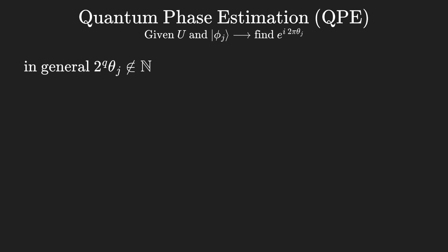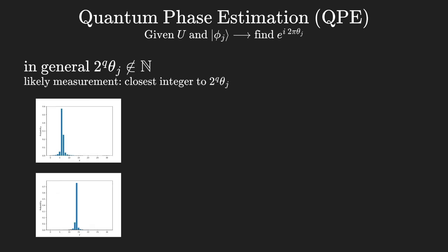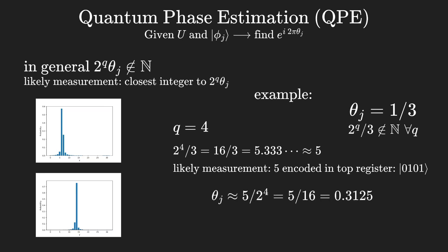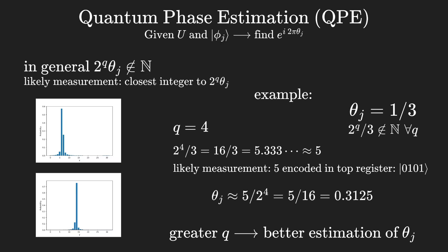In general, this value will not be an integer. The most likely measurements will be the closest integers to this value, resulting in probability spikes centered around it, as shown in these example plots. For instance, for an argument of one-third, the value will never be an integer despite the qubit count. If the top register has four qubits, the value is 5.333, where 5 is the nearest integer. The mostly likely measurement will be 5 encoded in the top register, from where the argument is extracted to be 0.3125, an approximation of the real value of a third. Increasing the qubit count results in more precise extractions of the eigenvalue argument.